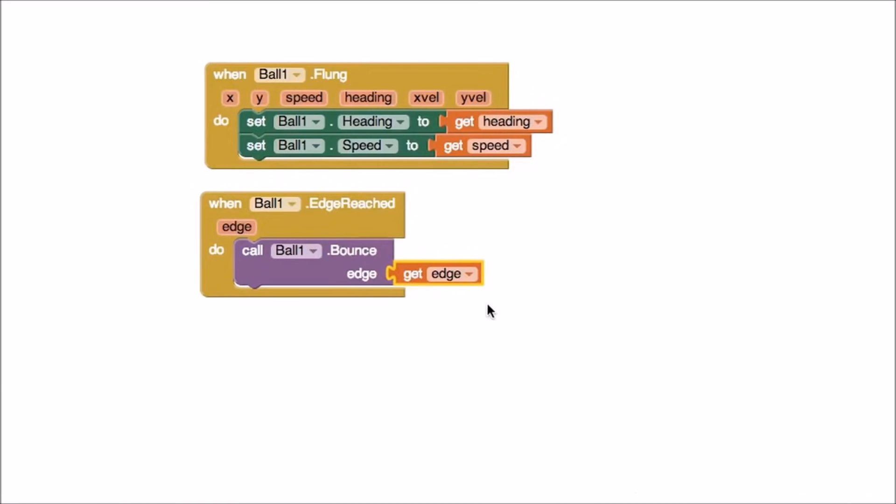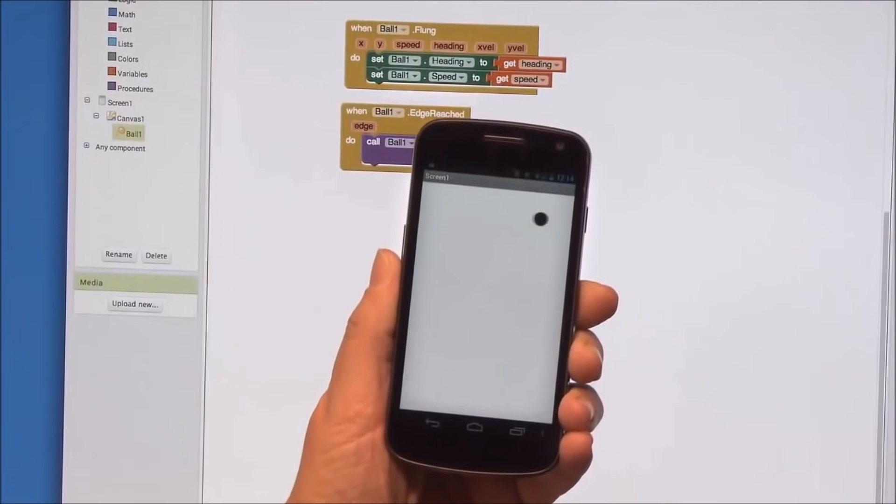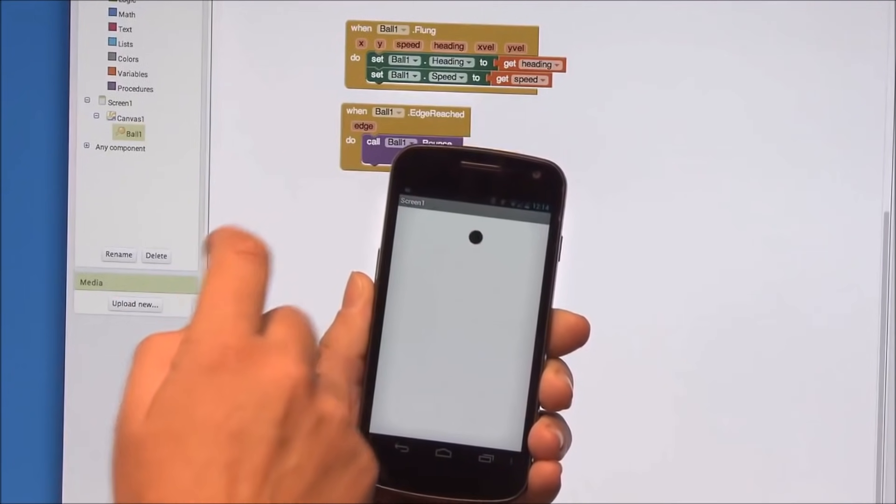That's all. Test your app out again. Hey, look, the ball bounces off the edges now. Pretty cool, huh?